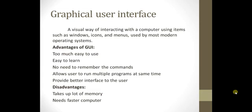GUI is defined as a visual way of interacting with a computer using items such as windows, icons, and menus, used by most modern operating systems. If someone asks which is the best user interface operating system, the answer is graphical user interface — it is very reliable and easy. You don't need to remember commands, it is easy to understand, and runs multiple programs at the same time.